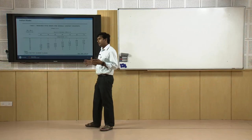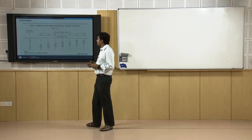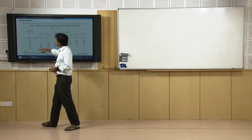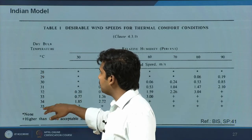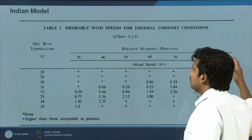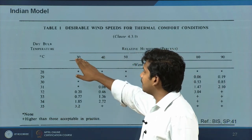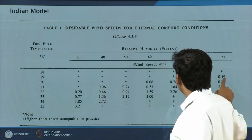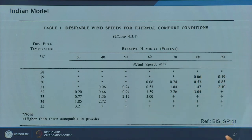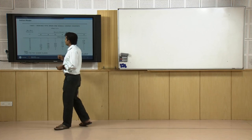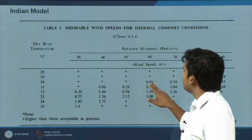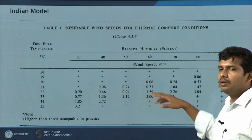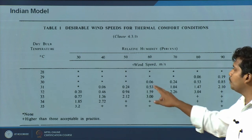Acceptably warm means it does not have to be really comfortable — it can be warm but still acceptable, and the conditions slightly differ. The first table has dry bulb temperatures from 28 to 35 degrees along rows, and relative humidity from 30% to 90% along columns. The numbers represent the required air velocity.